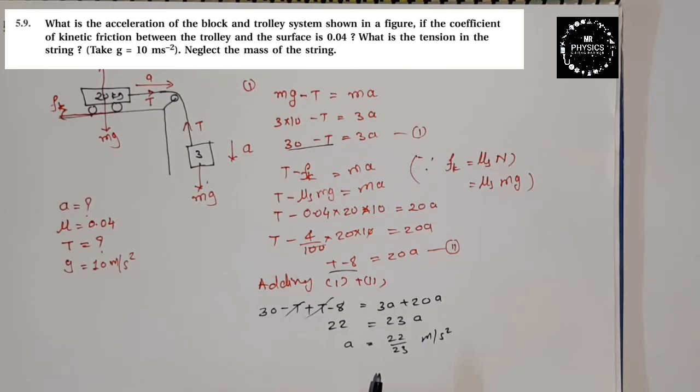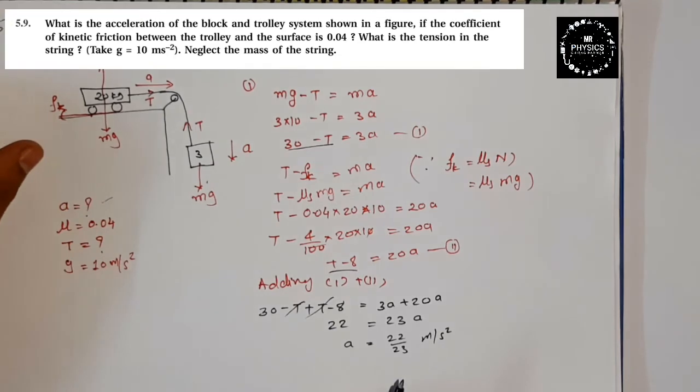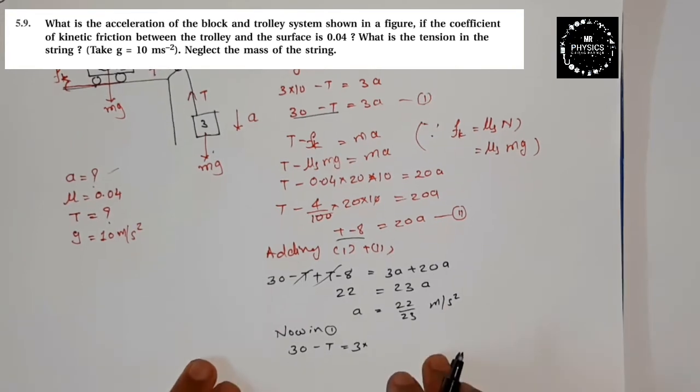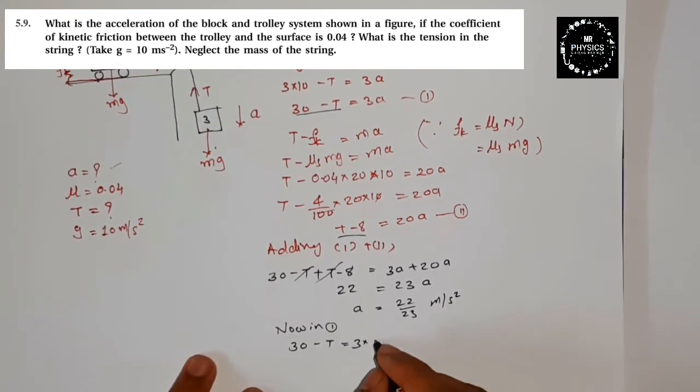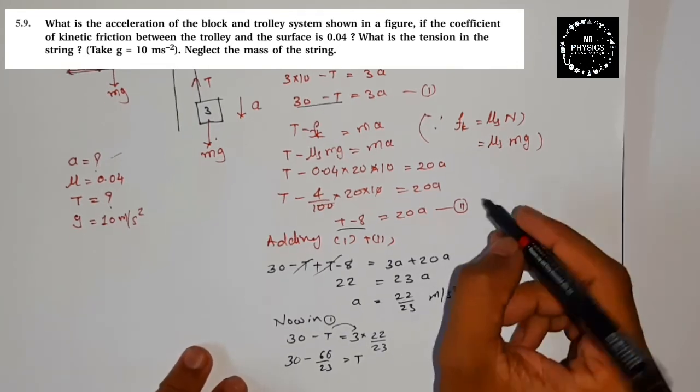Acceleration aa gaya. Define kya karna humein? Tension bhi define karna. Pehla answer hamara yaha aa gaya. Ab koi bhi equation mein laga lo. Chalo main laga lete hun equation number 1. Now in 1 we have 30 minus T is equal to 3. A ki jagah kya lagayenge? A ki jagah hum log lagane wala hai 22 by 23. T ko idhar leke aayiye. To 30, yeh term idhar aa jayega.